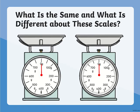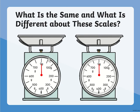Now let's look at what is the same and different about these scales. This scale goes up by 100: 100, 200, 300, 400, 500, 600, 700. There's a little line in between which marks the halfway point — half of 100 is 50, so it would go up by 50: 0, 50, 100, 150, 200, 250, and so on.